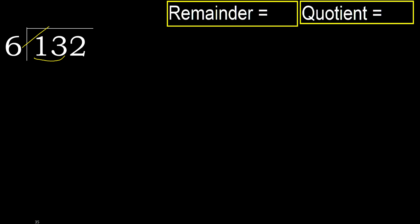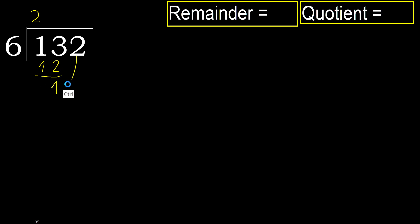6 multiplied by which number is nearest to 13 but not greater? 6 multiplied by 3 is 18 — 18 is greater. Multiply by 2: 12. 12 is not greater. 13 minus 12 is 1. Next.